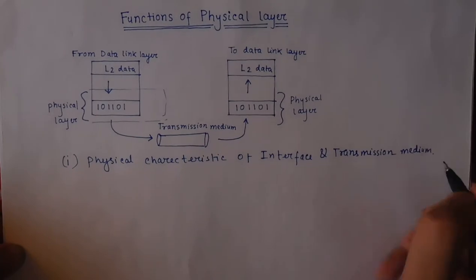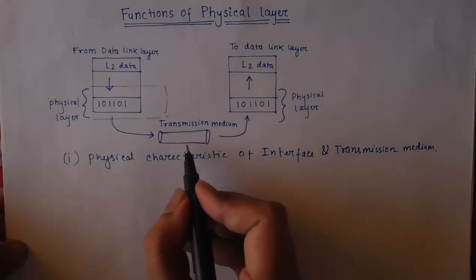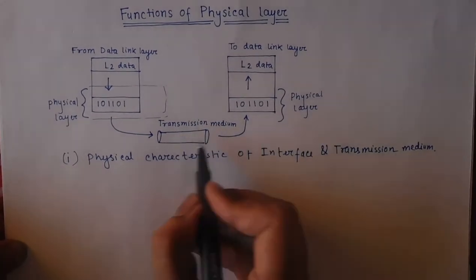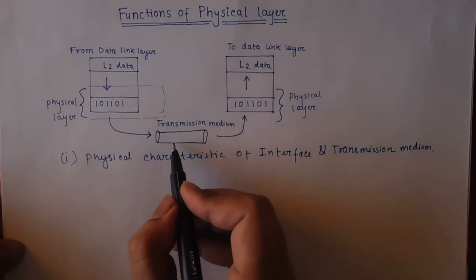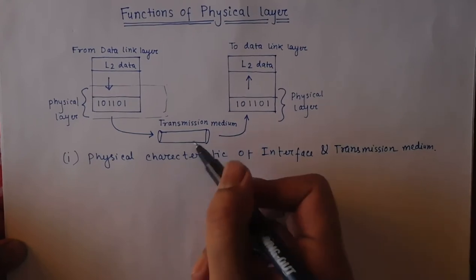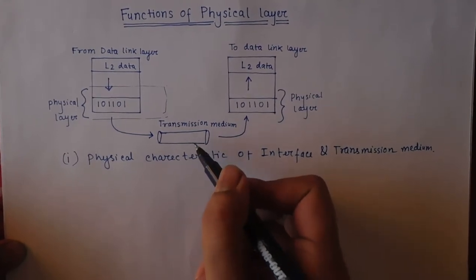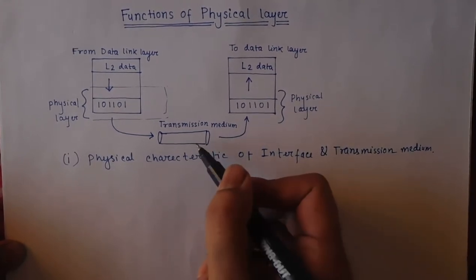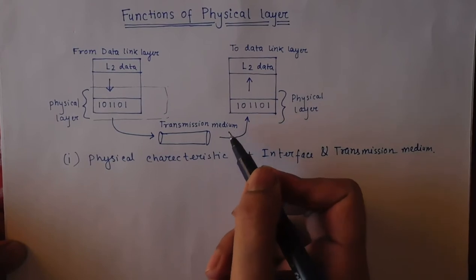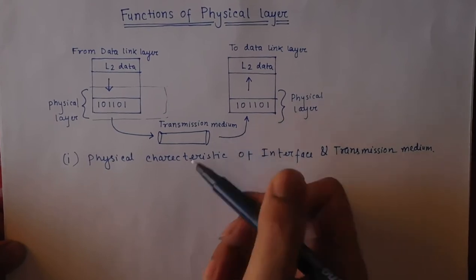This means we determine whether the transmission medium is guided or unguided. If it is guided, we can use optical fiber or twisted pair. If it is unguided, it means wireless transmission.